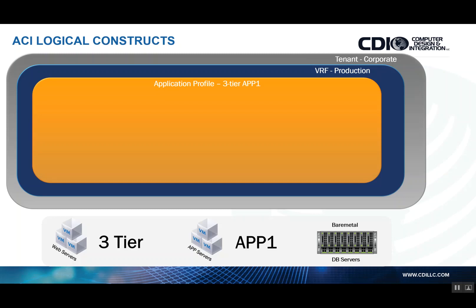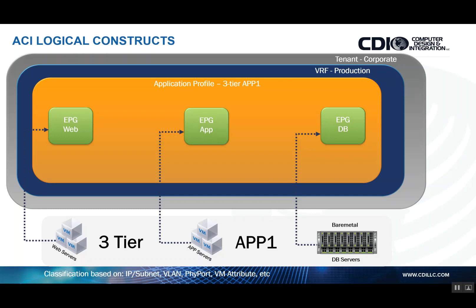After defining the VRF, we can start creating the application network profiles. In this case, I have my three-tier application one profile. Within that profile, you create your EPGs, or endpoint groups, which are basically a grouping of common services that make up the application — in this case, an EPG for web, an EPG for app, and an EPG for database. We can classify our endpoints through various ways, such as based on IP address, subnet, VLAN, physical port, or even VM attribute, with the goal of grouping common components together so they can apply any given policy as a group versus individually.